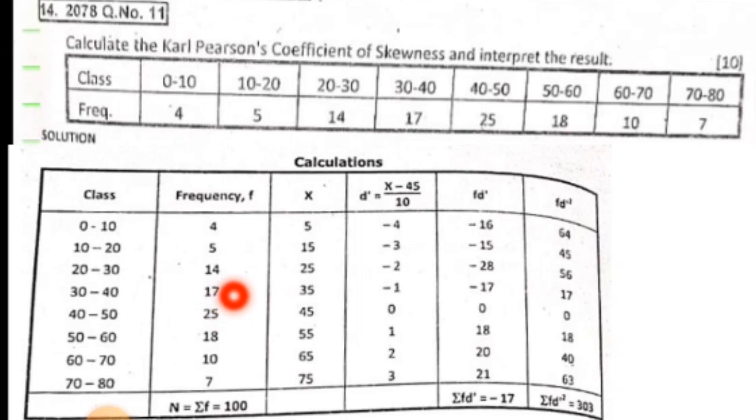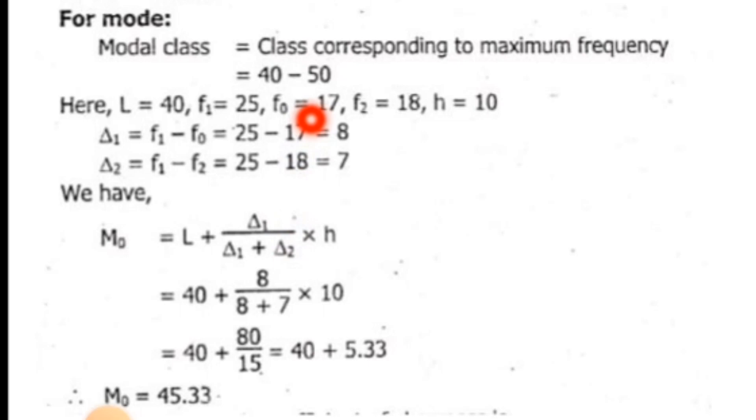For the modal class 40 to 50, L equals 40, f1 equals 25, f0 equals 17, f2 equals 18. Delta 1 equals f1 minus f0 equals 25 minus 17 equals 8. Delta 2 equals f1 minus f2 equals 25 minus 18 equals 7. Mode equals L plus delta 1 upon delta 1 plus delta 2 into h. So mode equals 40 plus 8 upon 8 plus 7 into 10, which equals 40 plus 80 upon 15 equals 40 plus 5.33 equals 45.33.